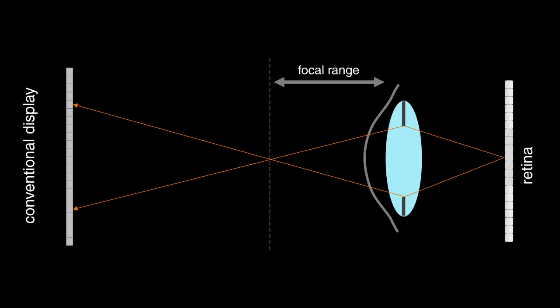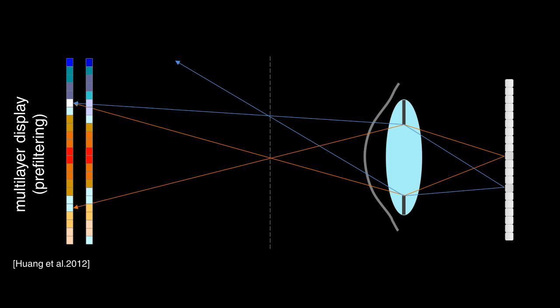For the display outside the focal range of the eye, the image is convolved with the kernel and the retina receives a blurred image. The multi-layer method pre-filtered the image content so a sharp image is received, but because of the shared pixels, colors are mixed and the contrast is low.